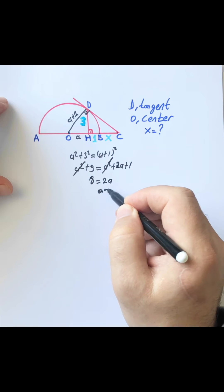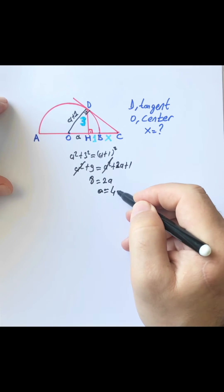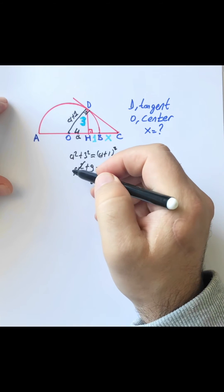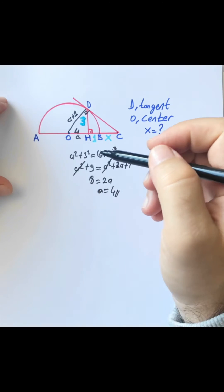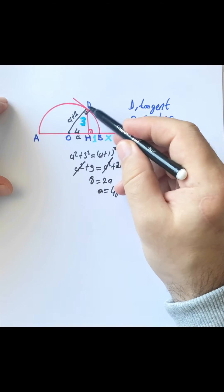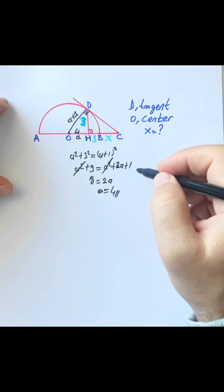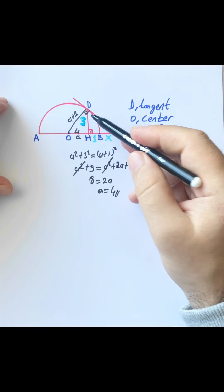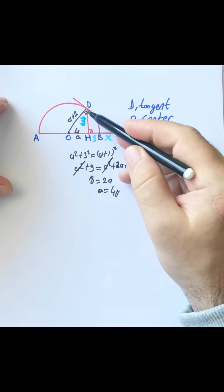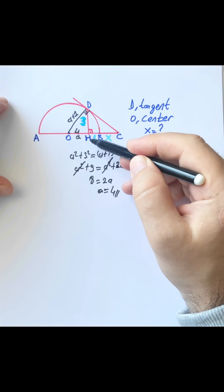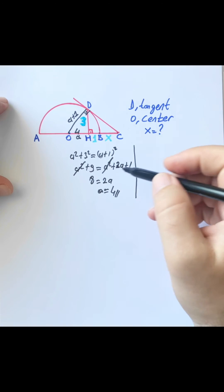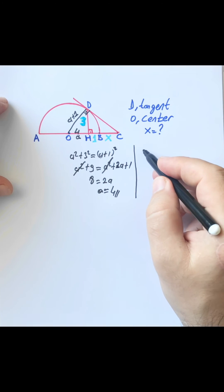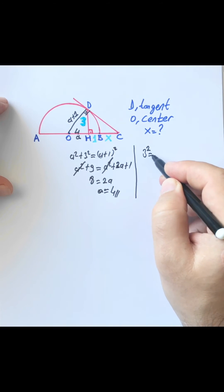We find a equals four units, so OH is four units. In triangle ODC, we can use Euclid's theorem because here is 90 degrees. When we use Euclid's theorem in triangle ODH, we know that three squared is equal to OH times HC.